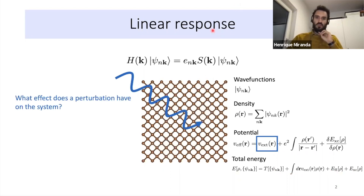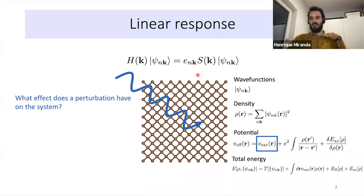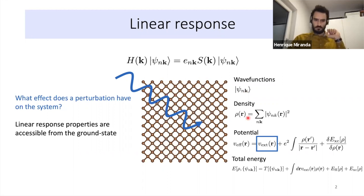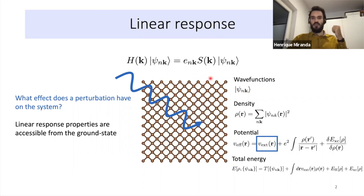What linear response tries to do is answer this question: if we change the potential — if we have an external perturbation such as a laser — what effect does this have on the system? How do the wave functions change? This is interesting for many properties. Importantly, these linear response properties can be accessed from the ground state using perturbation theory.